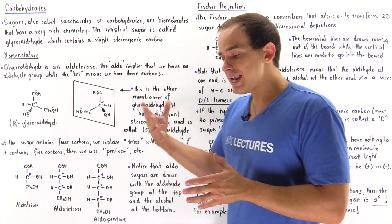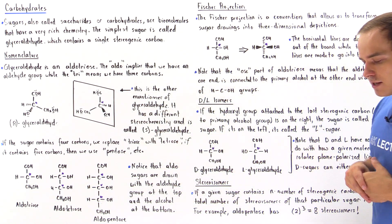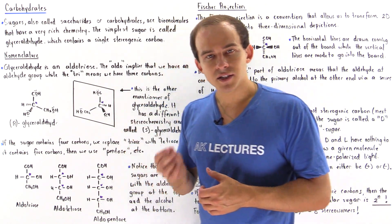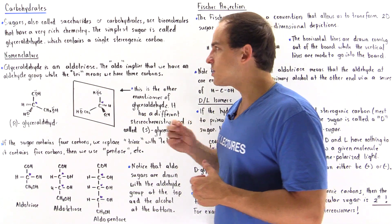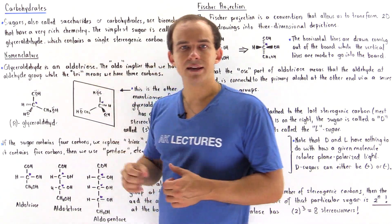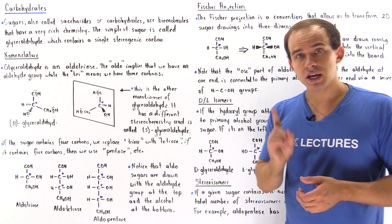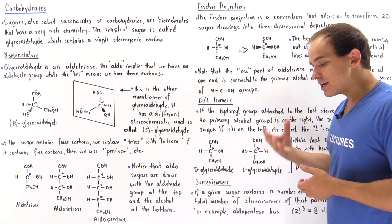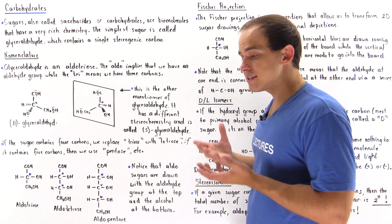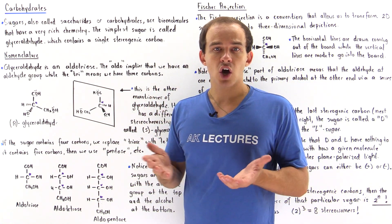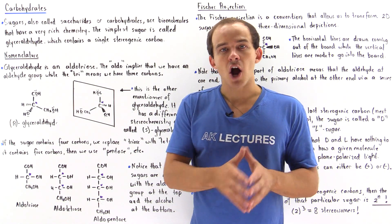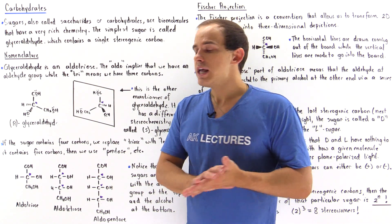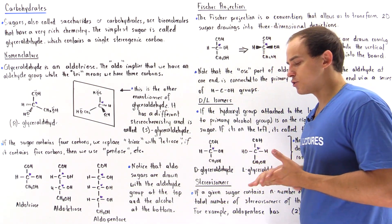Let's begin by describing the simplest type of sugar molecule, known as glyceraldehyde. Glyceraldehyde basically contains three carbon atoms, one of which is a stereogenic carbon. A stereogenic carbon is any carbon that is attached to four different groups, and so stereogenic carbons are chiral — they can have R absolute configuration or S absolute configuration.